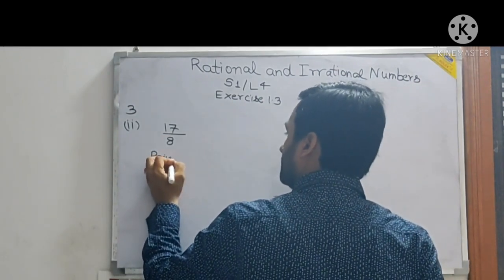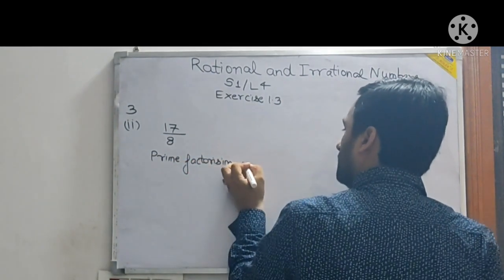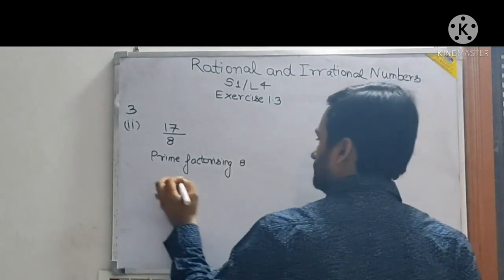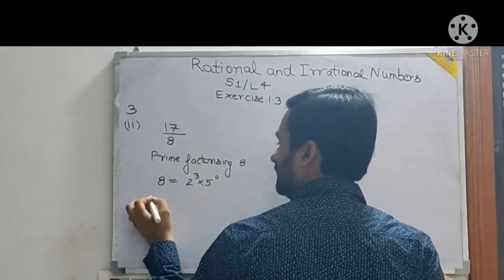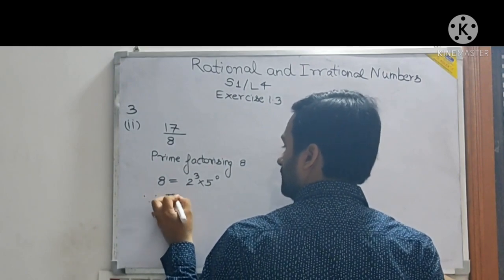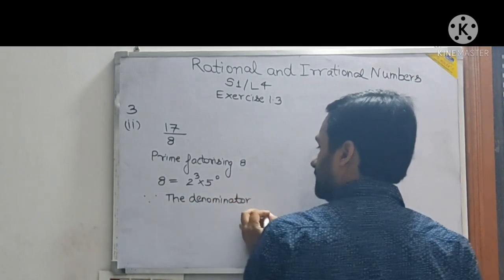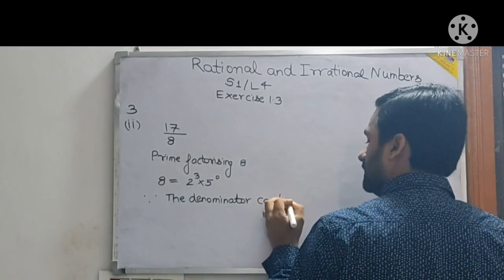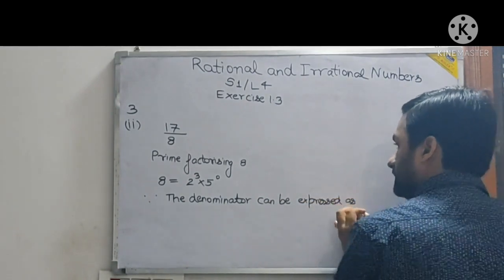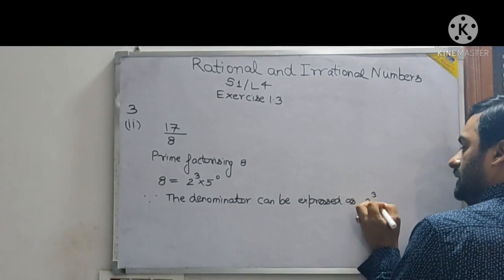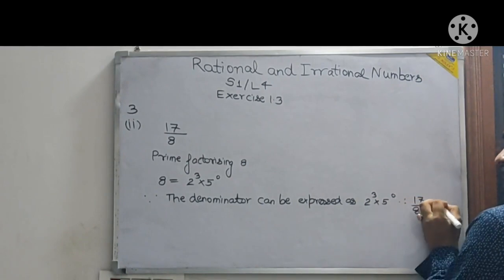So write here, prime factorizing 8, 8 will be equal to 2 to the power 3 into 5 to the power 0. So write, since the denominator can be expressed as 2 to the power 3 into 5 to the power 0, therefore 17 by 8 will have a terminating decimal expansion.